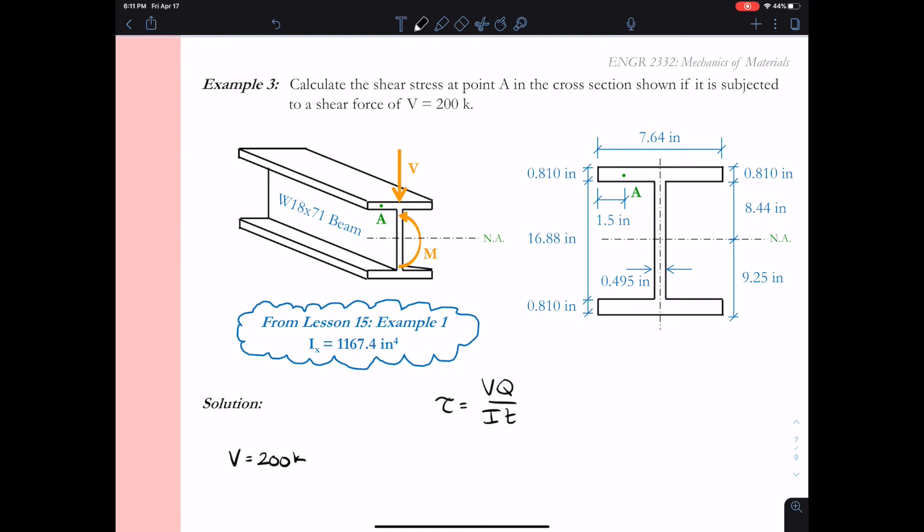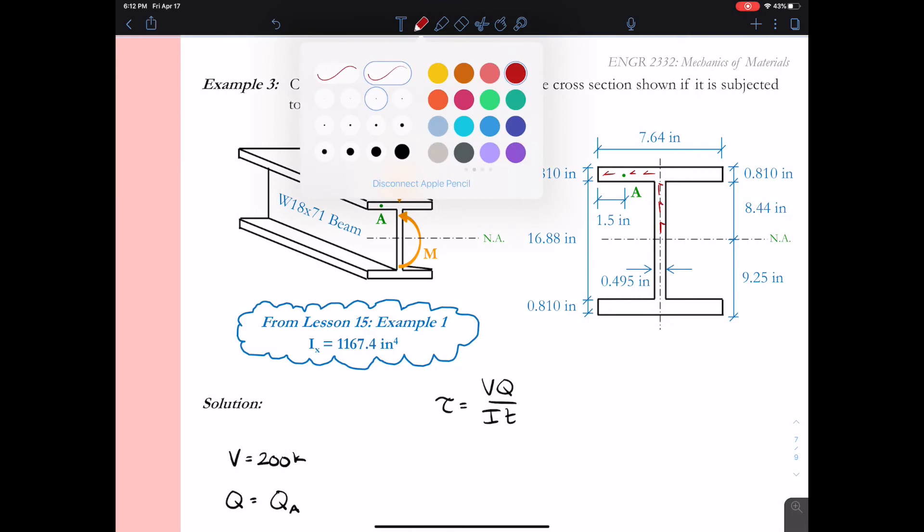Working through our variables, V is 200 kips - that's specified in the problem statement. This W18 by 71 beam has 200 kips acting on it and we could pull this from a shear diagram for the beam if we had one. Next, because we're interested in the shear stress at point A, I want to look at the value for Q but Q at the point A.